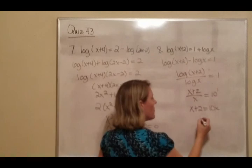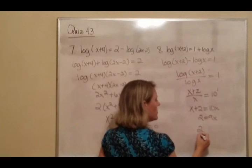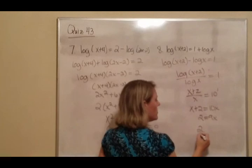Now, there's two x's on both sides, so we'll bring this over. So that's 9x. We divide by 9, so 2 ninths equals x. And that is .2222.